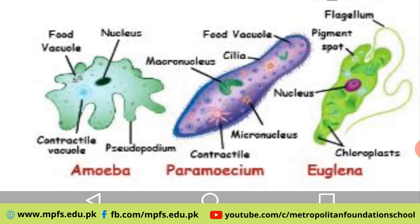All these things are made up of many cells, so we place them in multicellular organisms. You are multicellular. As I mentioned, we are multicellular, so is a dog, an elephant, a mango tree, a mushroom, and most of the plants and animals around you. I hope the concept of unicellular and multicellular organisms is now clear.